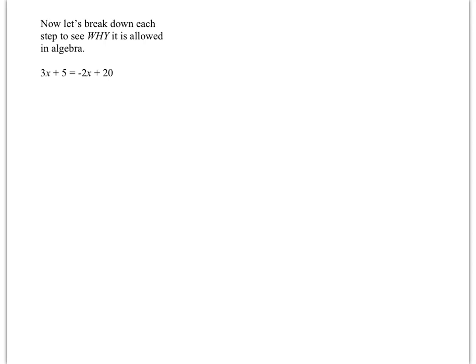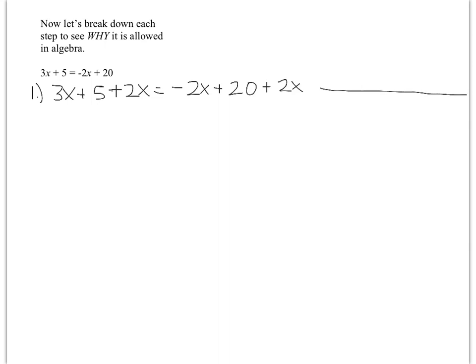The very first thing most of you probably did is add 2x to both sides. So step one, I'm going to write: 3x plus 5 plus 2x equals negative 2x plus 20 plus 2x. When naming properties, you're always looking at the line above compared to the line you're currently on. What changed from here to here is I added 2x to both sides of the equal sign. That property is called the addition property of equality — I'll abbreviate it as 'add prop of ='.